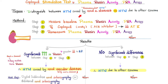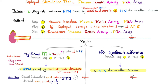The captopril stimulation test combined with the plasma renin activity assay is used to determine whether hypertension is caused by renal artery stenosis, i.e., renovascular hypertension, or something else. Step one: measure the baseline plasma renin activity before doing anything. Step two: give the patient captopril, which is an ACE inhibitor. It inhibits angiotensin-converting enzyme, blocking the conversion of angiotensin 1 into angiotensin 2, causing angiotensin 2 to drop.